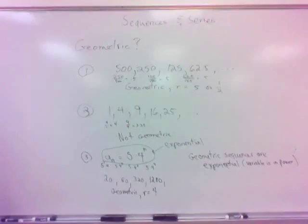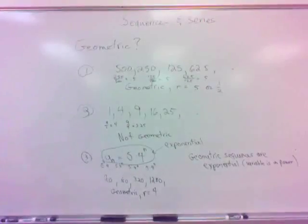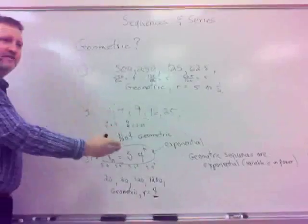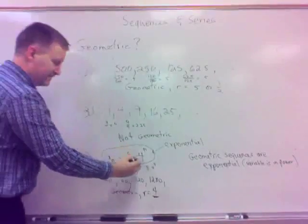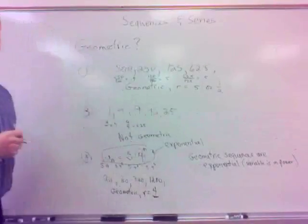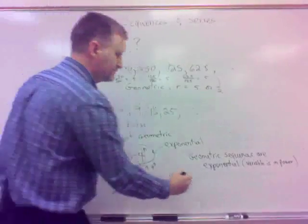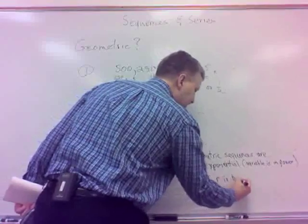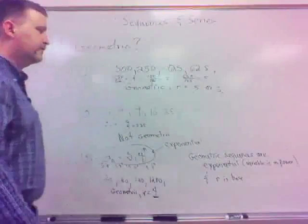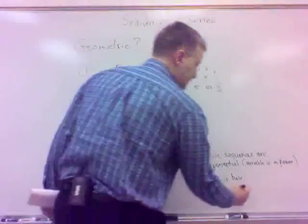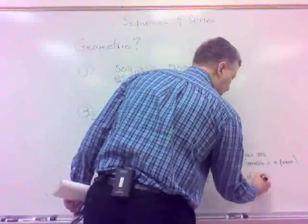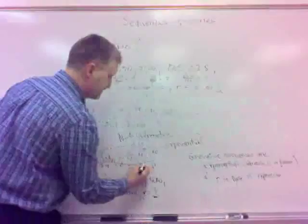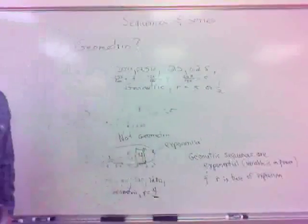So geometric sequences are exponential. The power contains the exponent. The variable is in the power. That's what that means. You've got the variable in the power. That's exponential, and that's geometric. Now, the other point is, notice, what was my ratio? 4. Do you notice 4 in the equation here? That's not coincidence. Turns out the ratio, the r, is the base of your exponential expression. Not the number in front. It's the base of whatever expression it is.